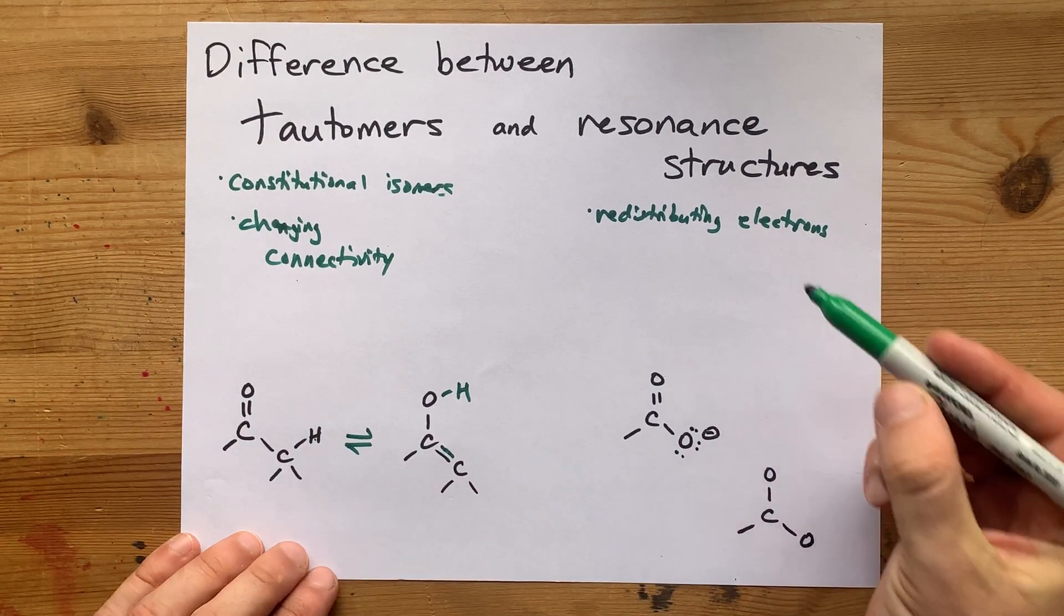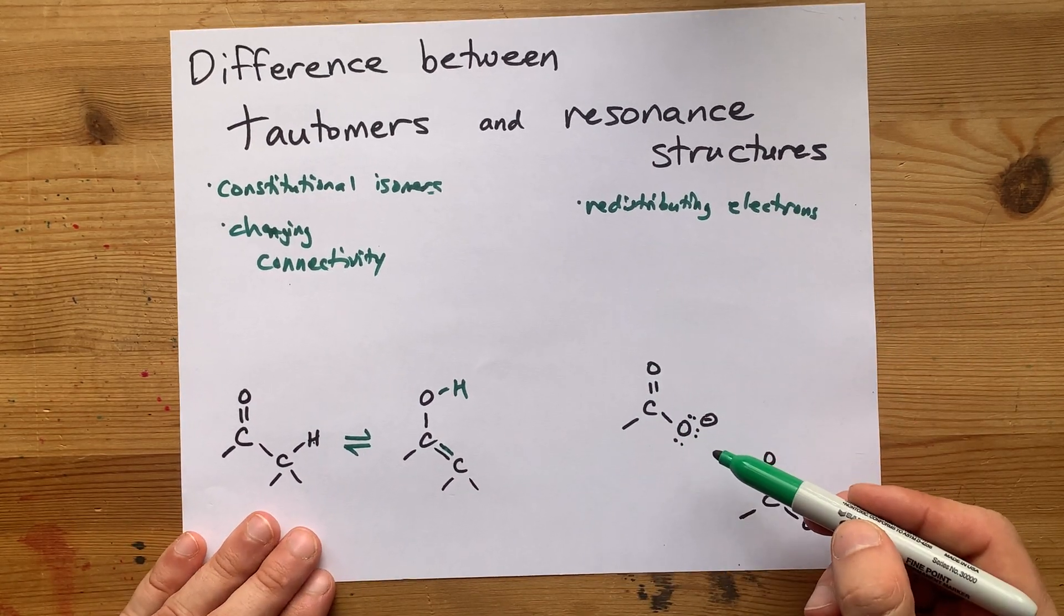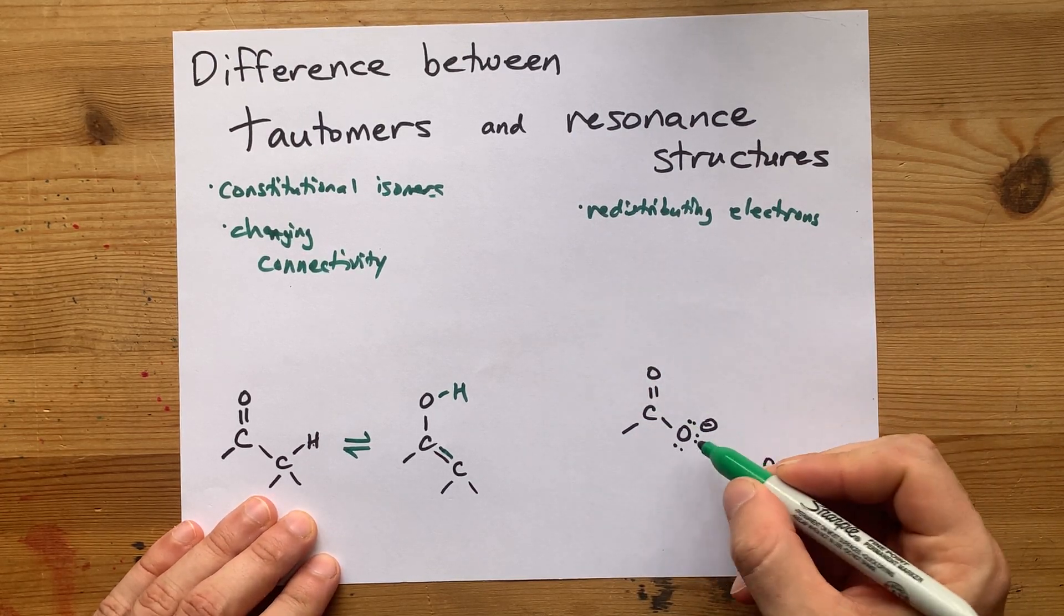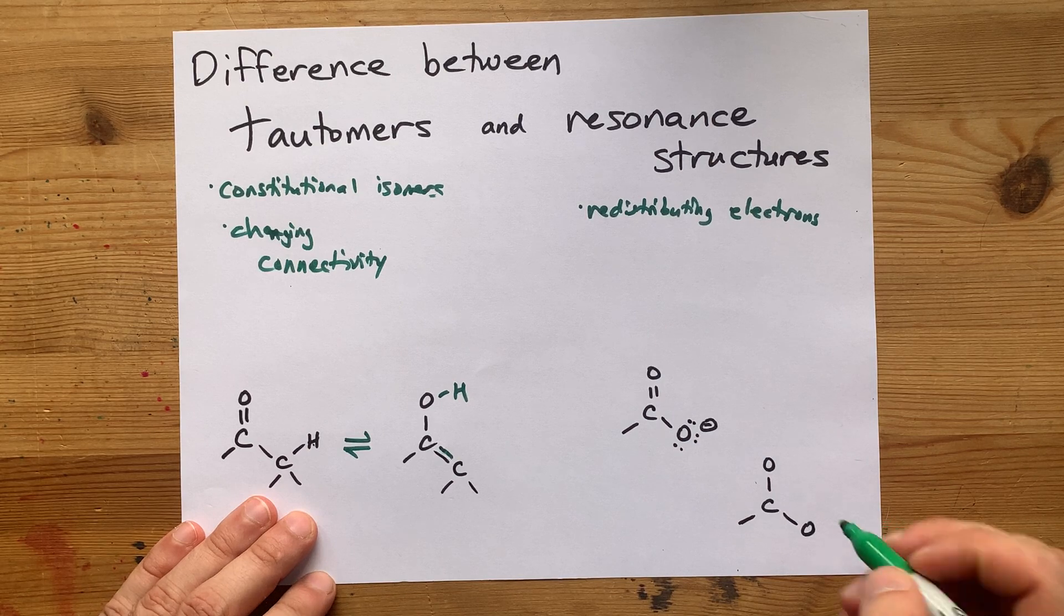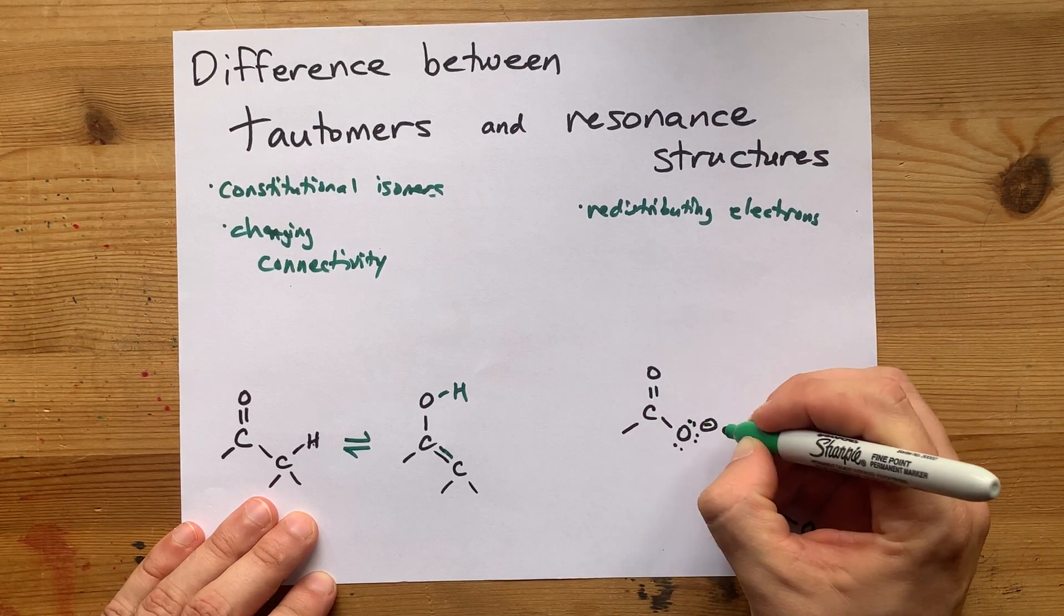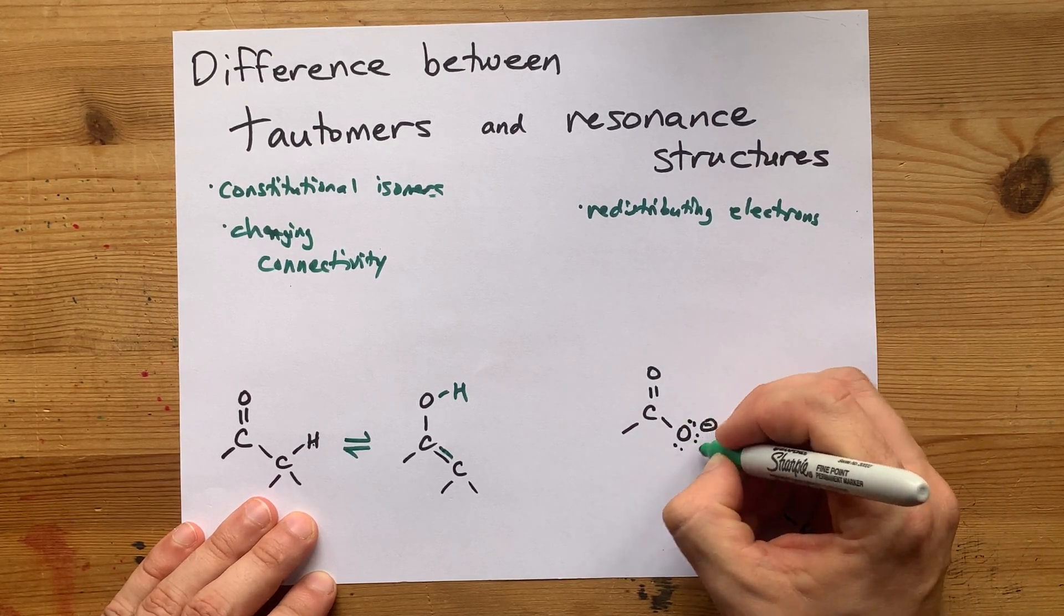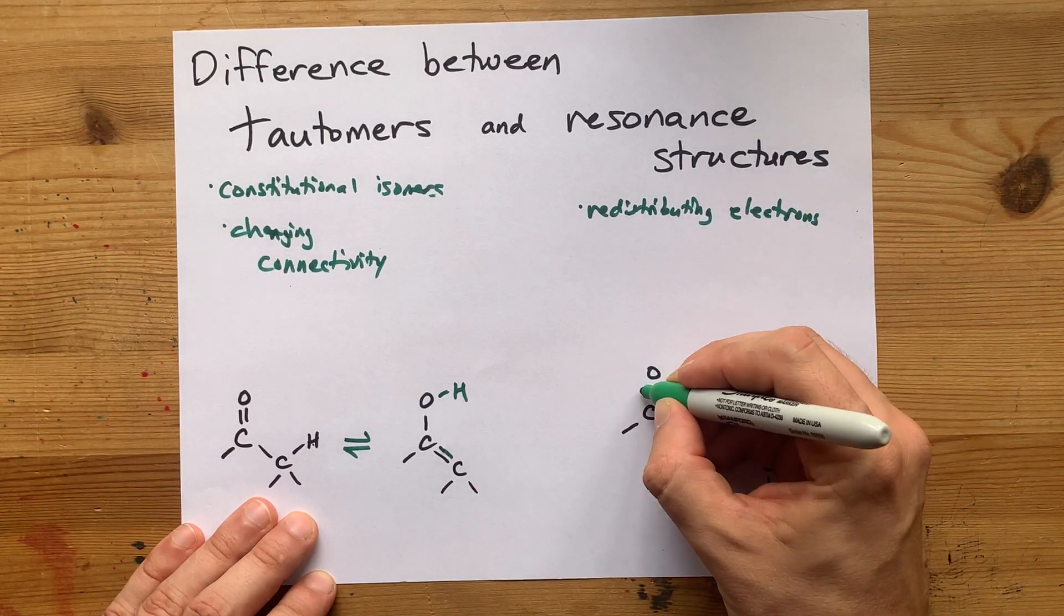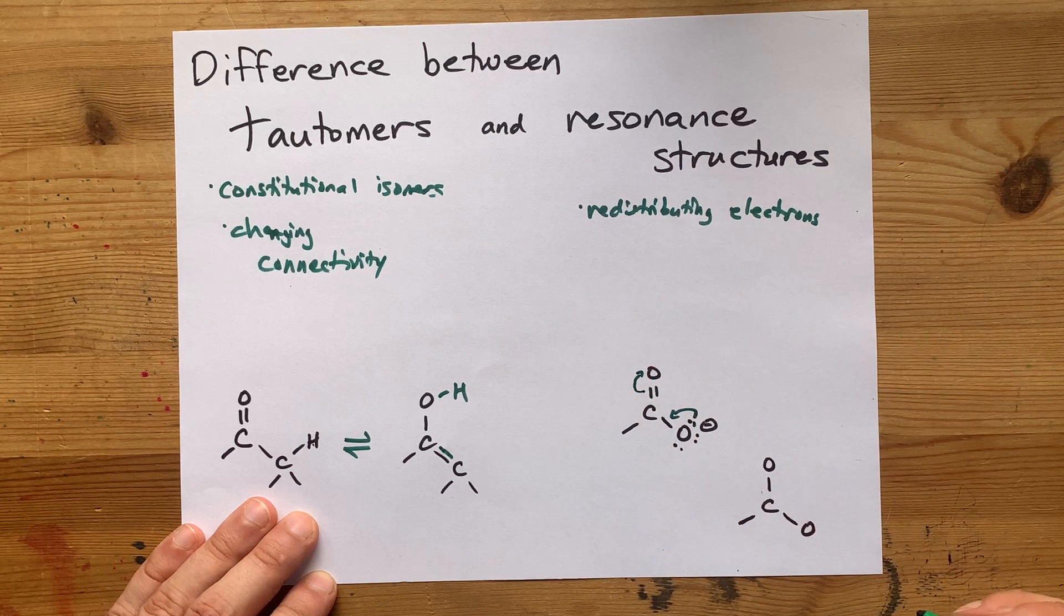My example for resonance structures here is a carboxyl ion. I have a double bonded oxygen on the carbon and a single bonded oxygen with a minus charge. But one of the lone pairs on the negatively charged oxygen can push to become a double bond, and then that can force the pi bond here to break.